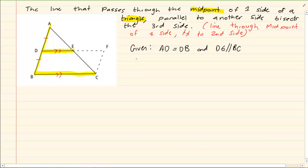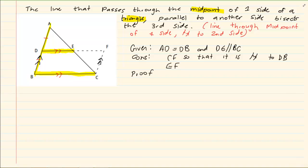What are we going to construct? Now we are constructing CF so that it is parallel to DB. We are also then constructing EF. Now if you look at the construction, let's go to our proof.